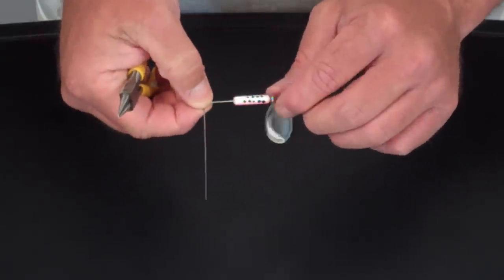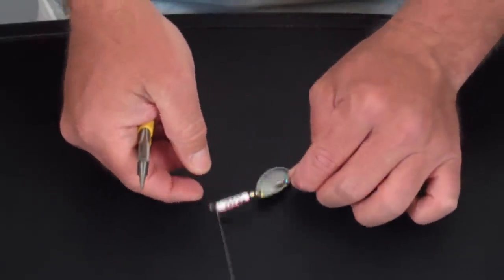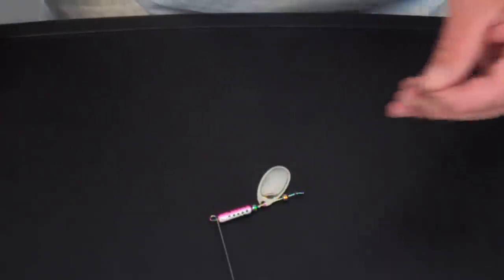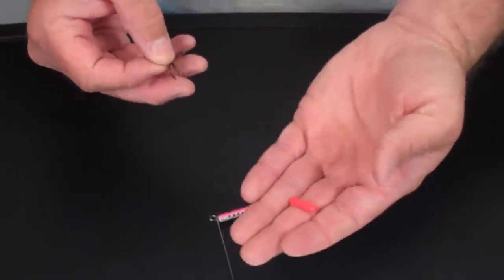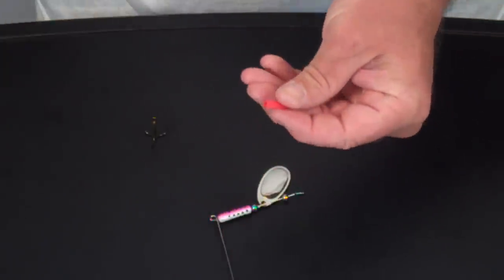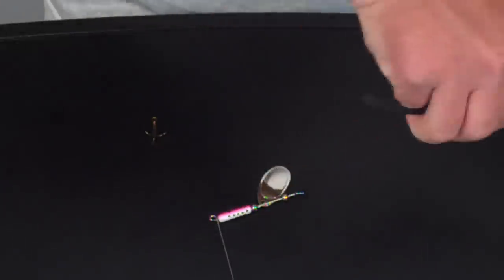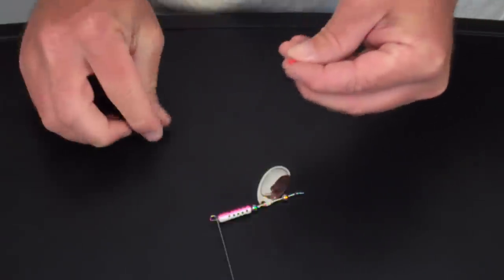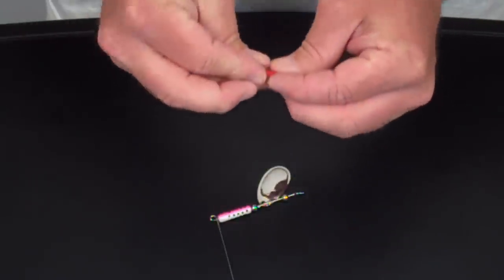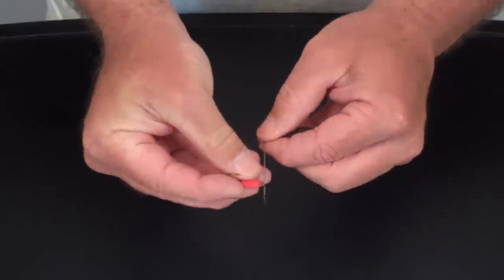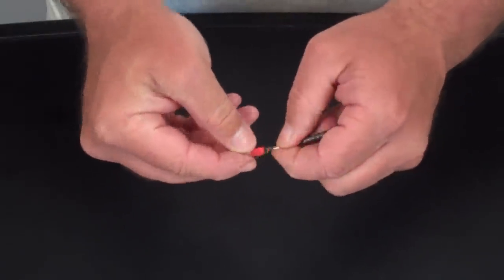With that bend complete, we're now ready to install our treble hook. For our treble hook, we'll use a small piece of vinyl tubing to dress it for color. We'll slide our treble hook on our partially formed loop.